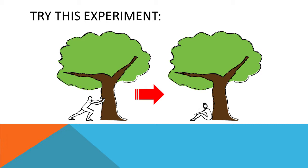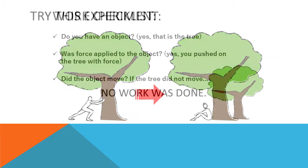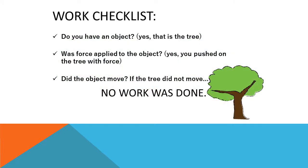Try this experiment. Go outside and find a really big tree. Push on it as hard as you can for one whole minute. Now measure how far the tree moved. Did you do any work? Let's see. In order to do work, you must have three things. Let's run through the checklist.